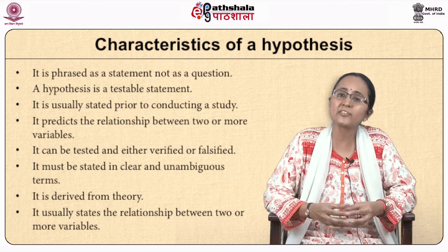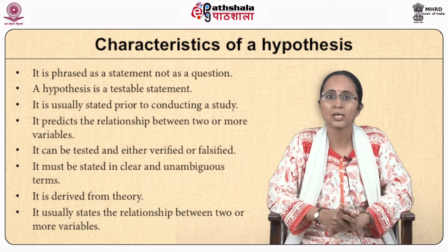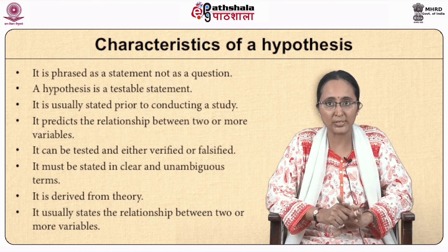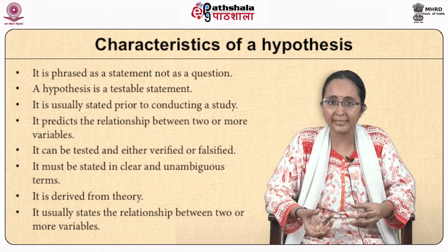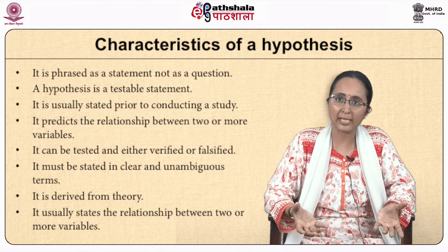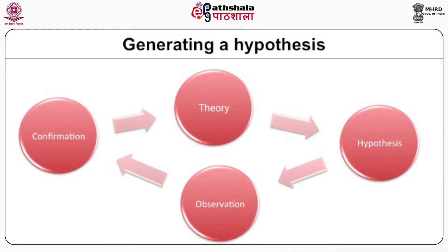If you make it too specific, you might not have enough information to validate or reject it. You must state it in clear and unambiguous terms. Seventh, it is derived from theory. Eighth, it shows a relationship between two or more variables. The hypothesis starts from theory — you develop a hypothesis, then collect data or observe, and you either confirm or reject it. It is a cyclic process.